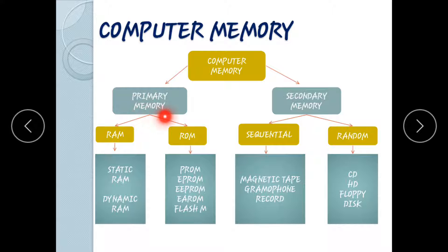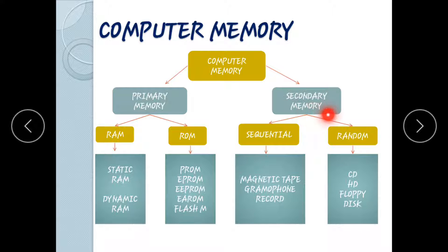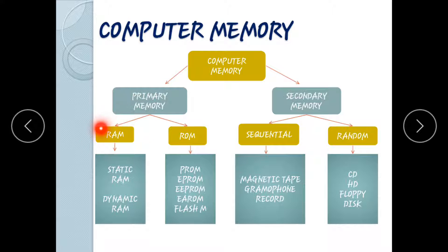Primary memory is temporary; secondary memory is permanent — it is volatile memory. Secondary memory can be deleted by the user. Primary memory is RAM — Random Access Memory — which can be accessed randomly.